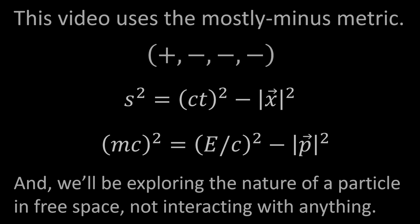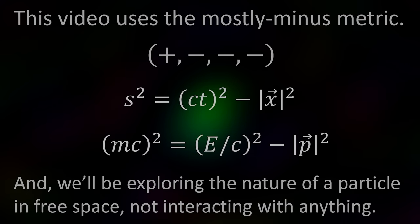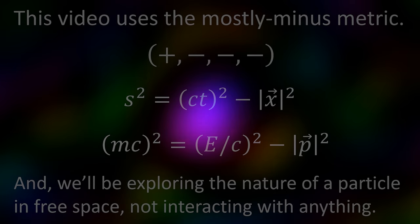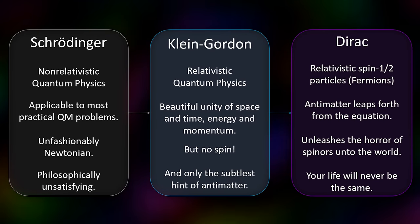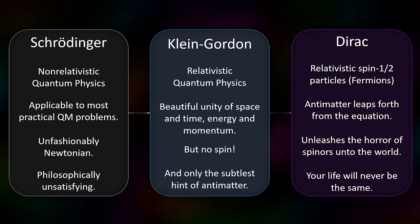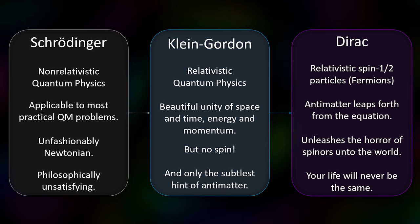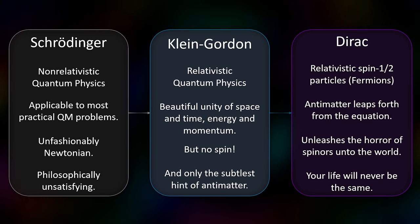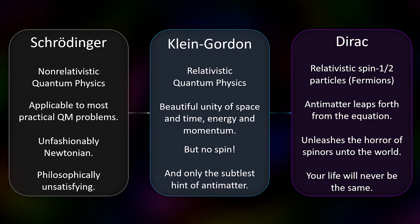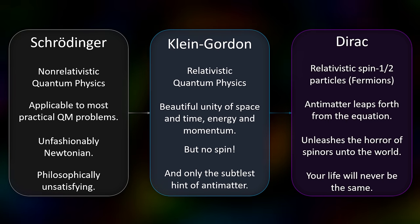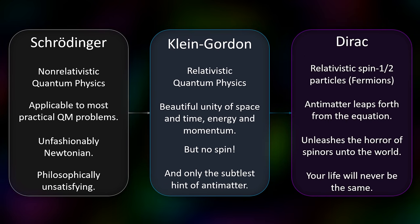The time has finally come to look at the Klein-Gordon equation. Before we get started, there are a couple of things to say about the scope of this video. The reason I'm interested in showing you the Klein-Gordon equation is that ultimately I want to show you the Dirac equation, so that we can better understand the nature of the electron. In that context, the Klein-Gordon equation is a stepping stone between the Schrödinger equation, which is non-relativistic, and the Dirac equation, which is relativistic.